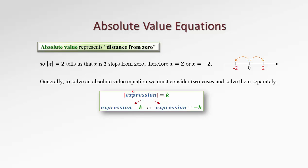Either our expression equals k, which is the first case, or our expression could be equal to negative k. Also notice that this number k must be non-negative — must be either positive or zero. If it is negative, we'll see from the beginning that such an equation will have no solution, because the left-hand side is always non-negative, therefore the right-hand side must also be non-negative, otherwise we'll have no solution.